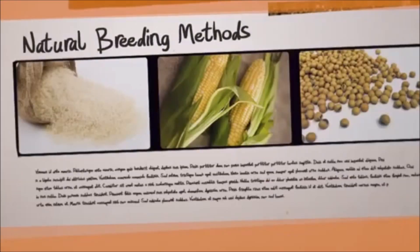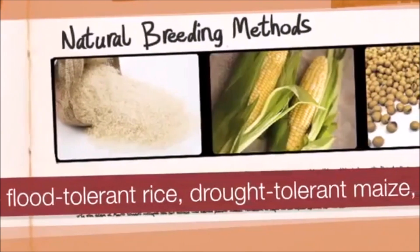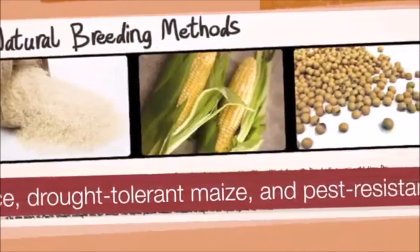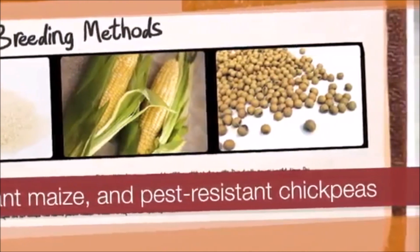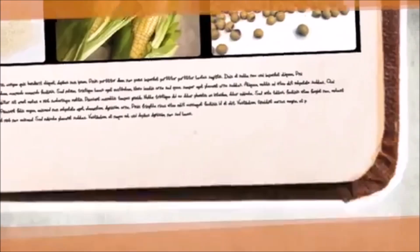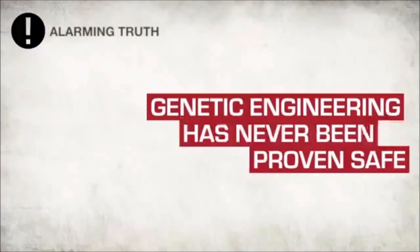natural breeding methods that produce efficient super crops like flood-tolerant rice, drought-tolerant maize, and pest-resistant chickpeas may actually offer more security for our food supply.